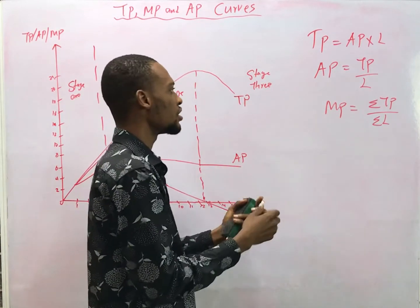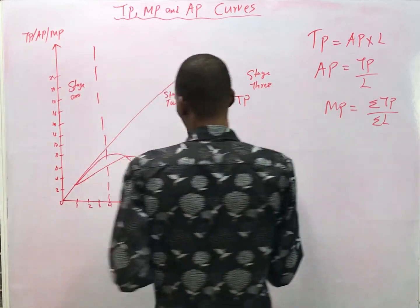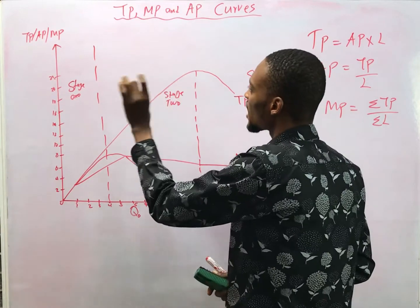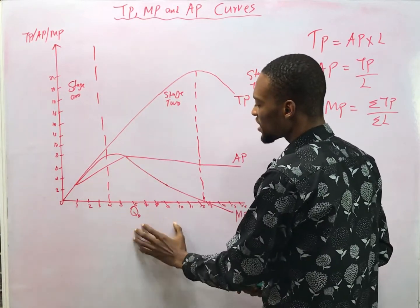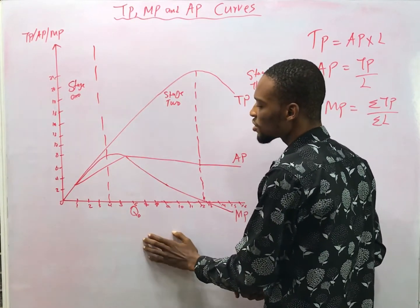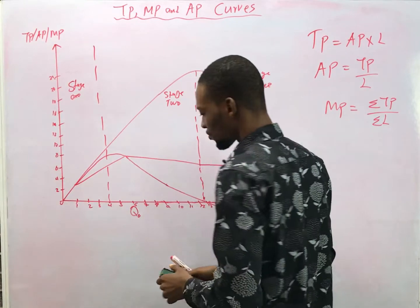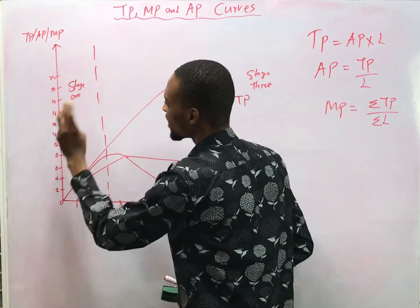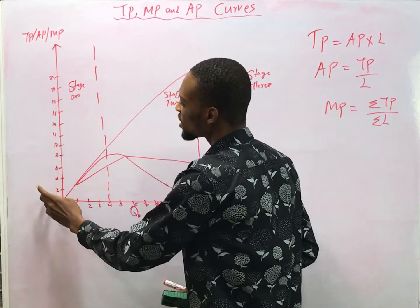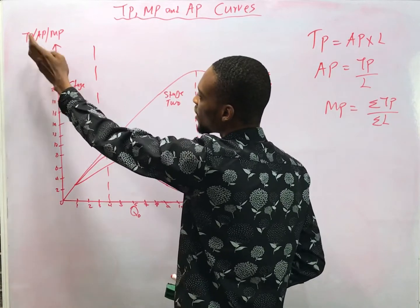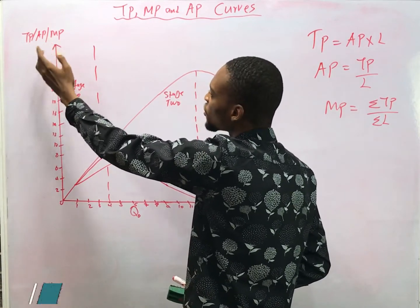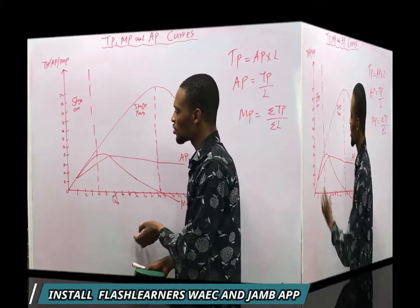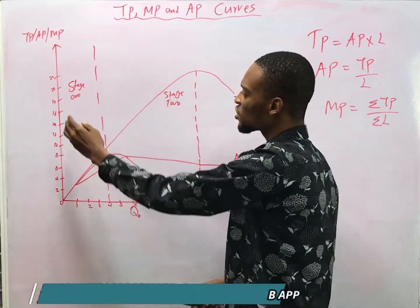Marginal product tries to explain what will happen to the output if the input is changed. This curve represents total product, average product, and marginal product. This axis is the input and this is the output. These are the values for each of the curves.